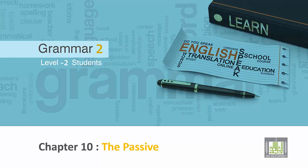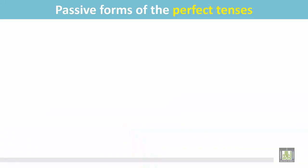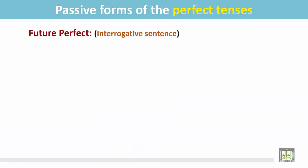Grammar 2 for Level 2 students. Chapter 10: The Passive. Passive forms of the perfect tenses — Future perfect, interrogative sentence.